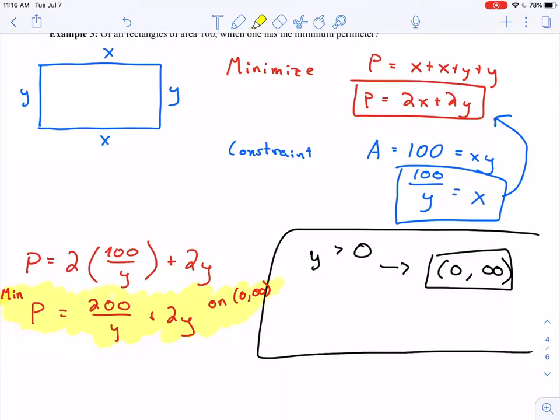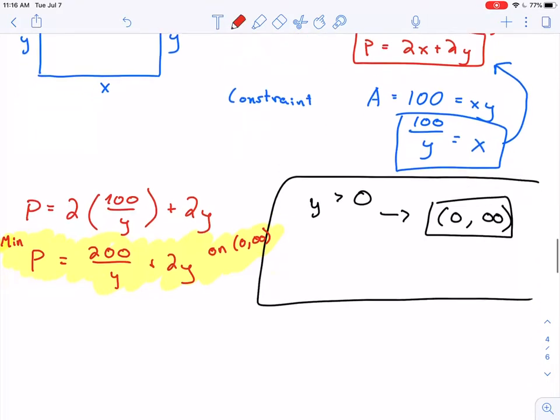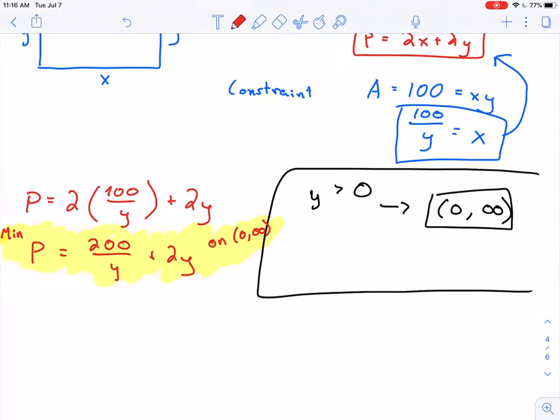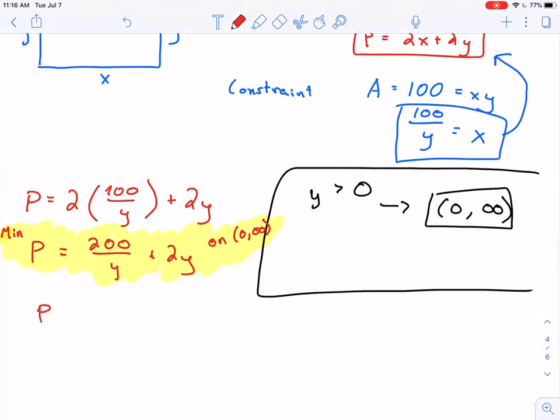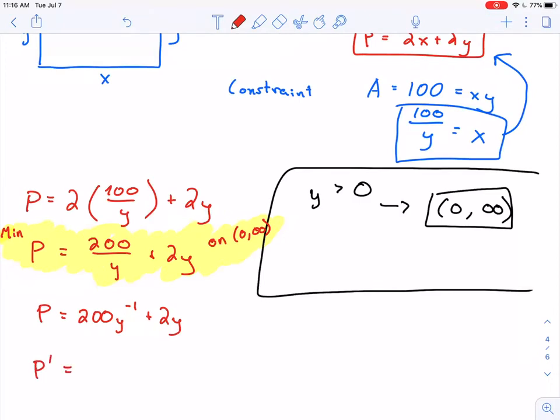So this is what we're trying to do right now. In either case, whether you're working on an open interval or a closed interval, first thing we should do is find our critical points. Those are, I think, the most important points. So I want to take the derivative. First, I'm just going to rewrite this as P equals 200y to the minus 1 plus 2y, so that I can take the derivative using my power rule fairly easily.